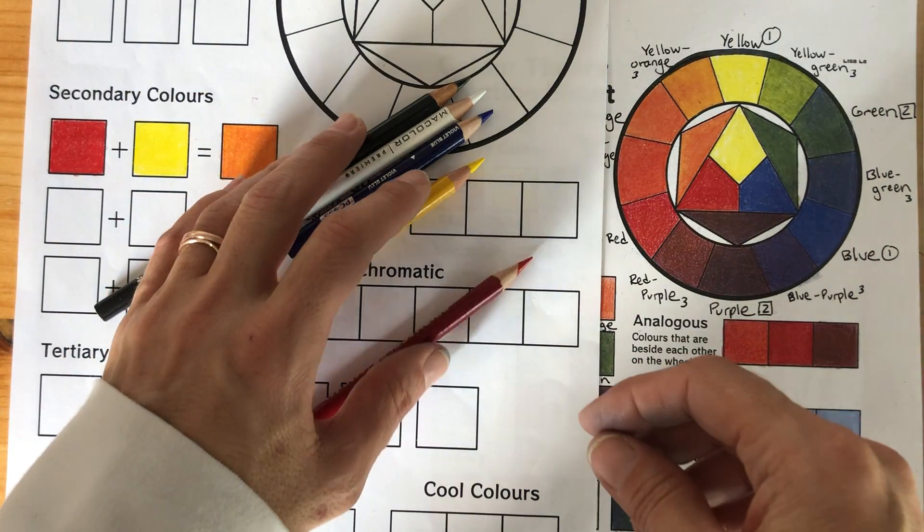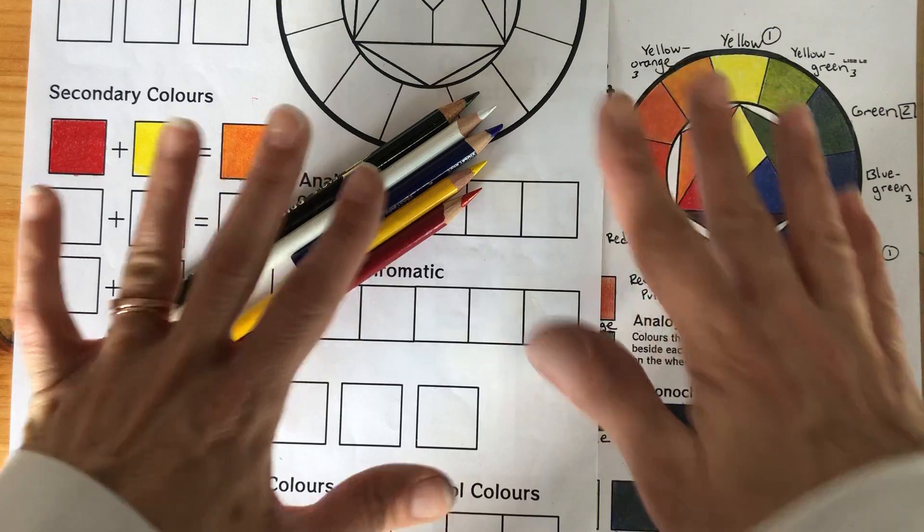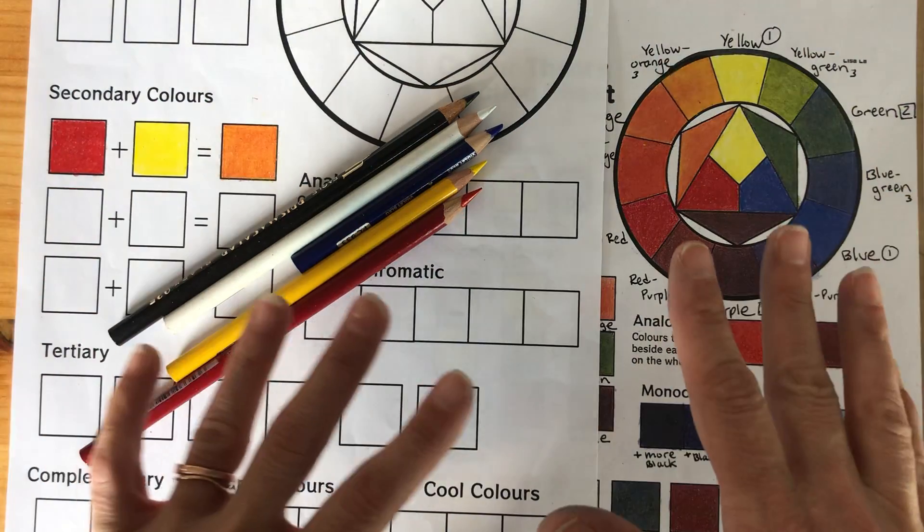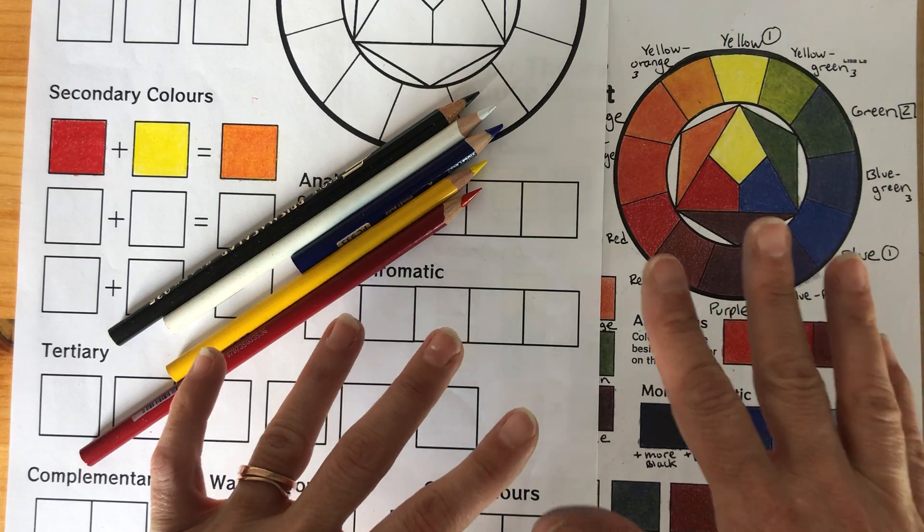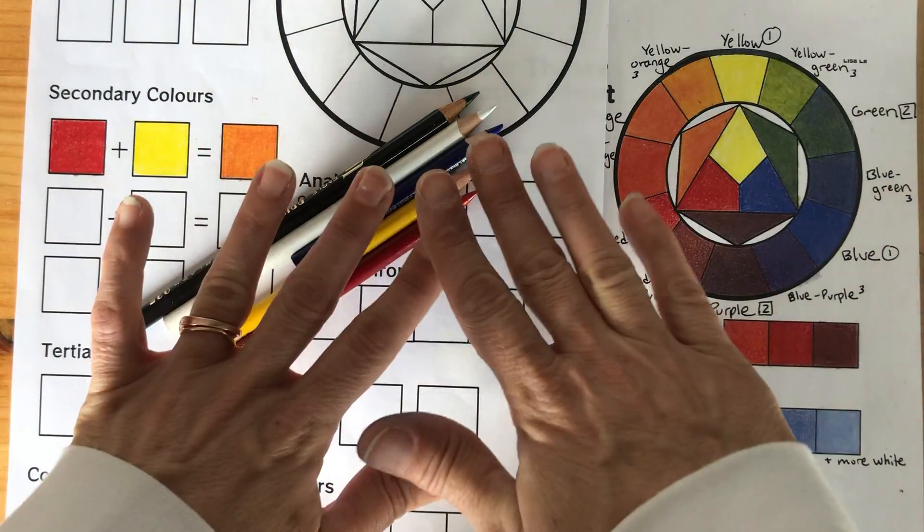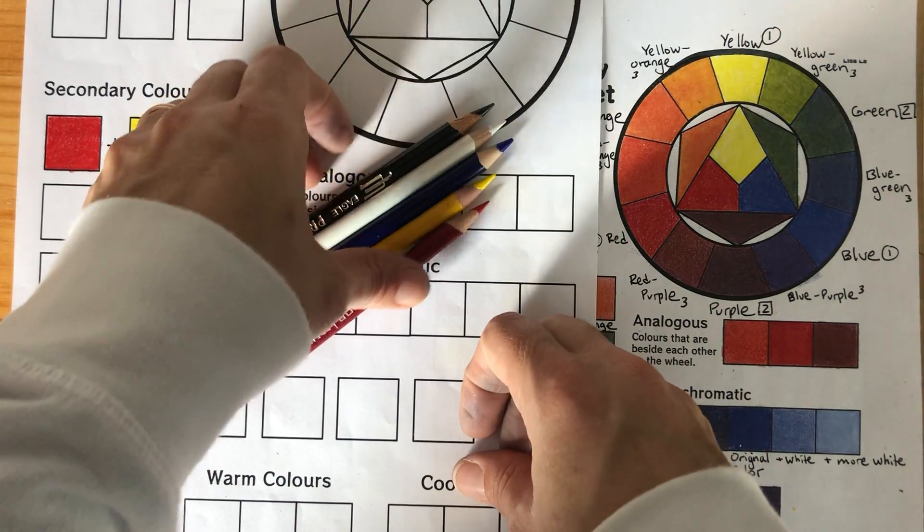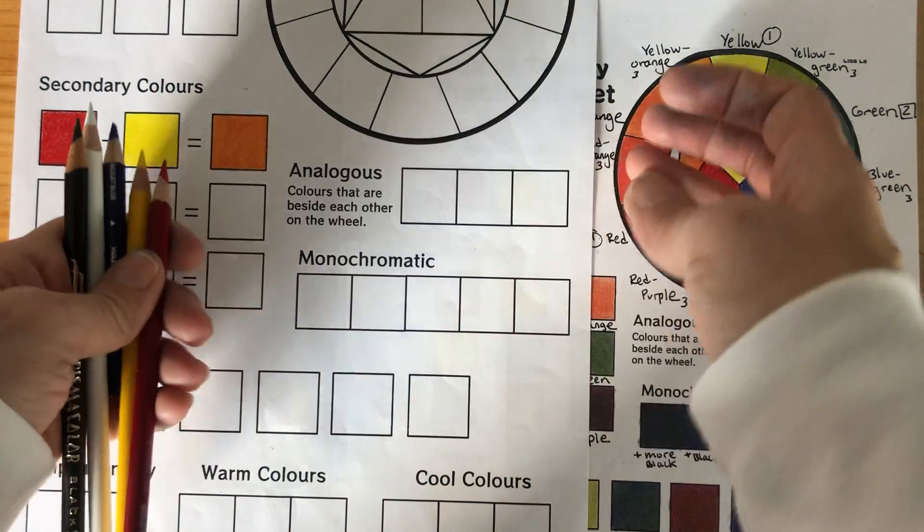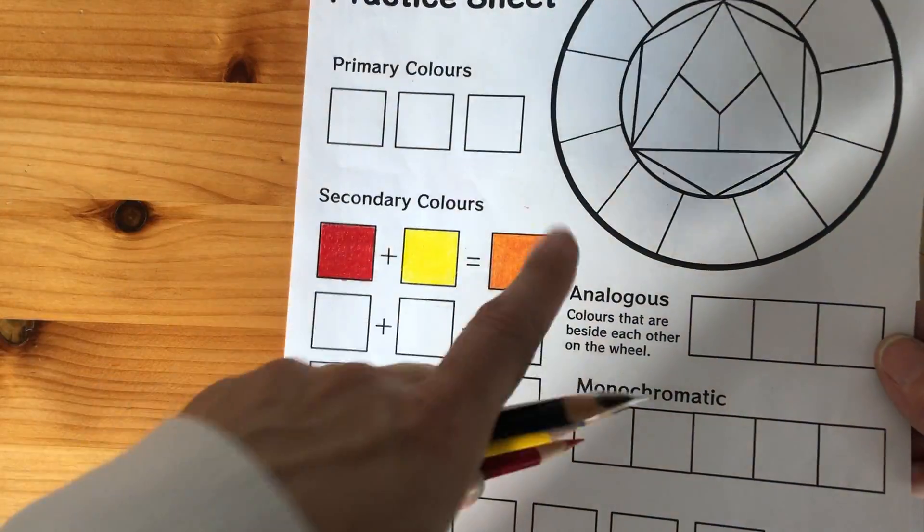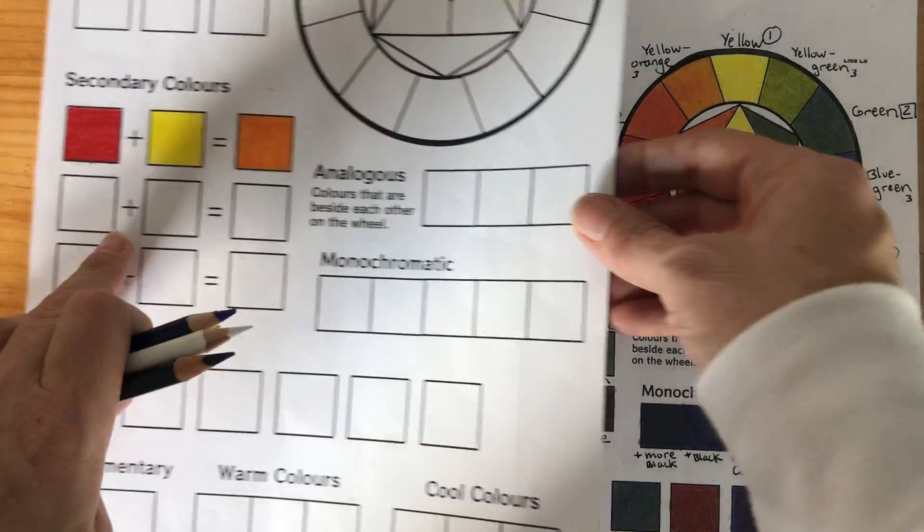Hi everyone. For this assignment, this is our first for our Prismacolor unit. I want to have everybody review and revisit the idea of color theory and how you can start to also begin to understand and use these pencils. So for this assignment, you're going to be getting this worksheet that you're going to work on and then this just gets, when it's complete, pasted into the visual journal.